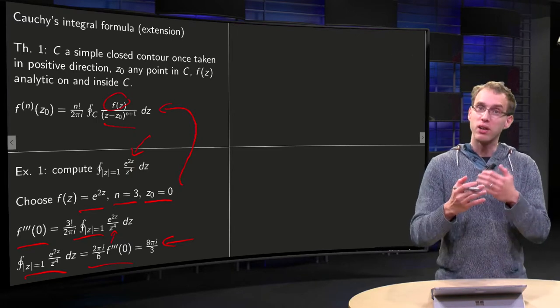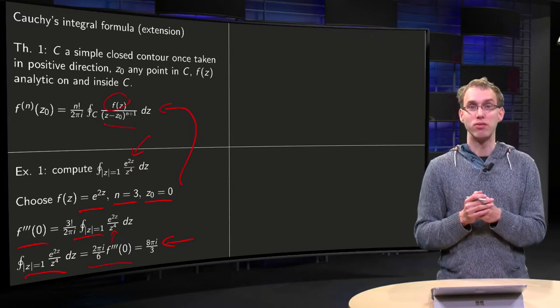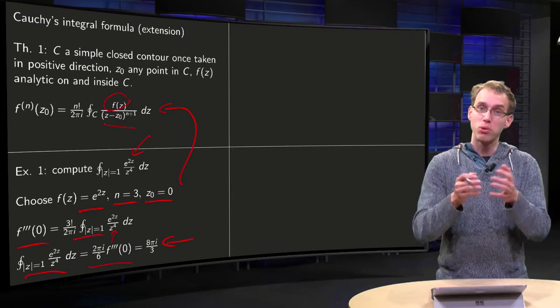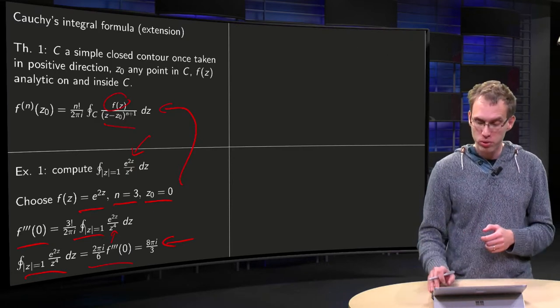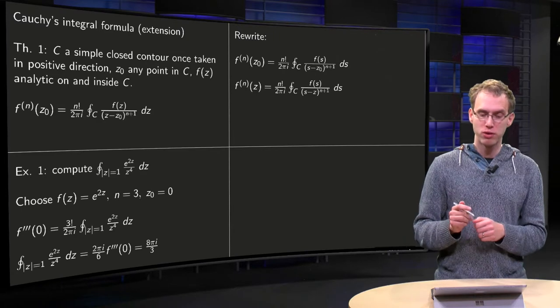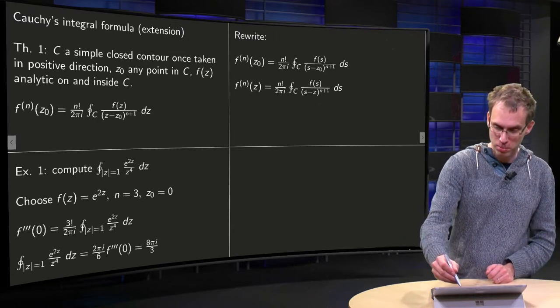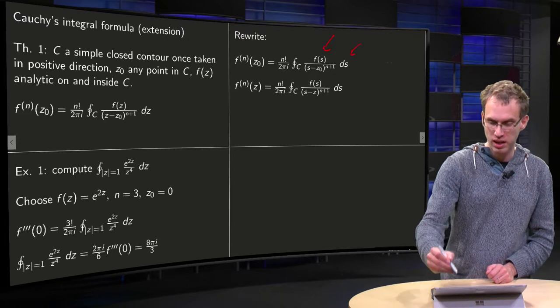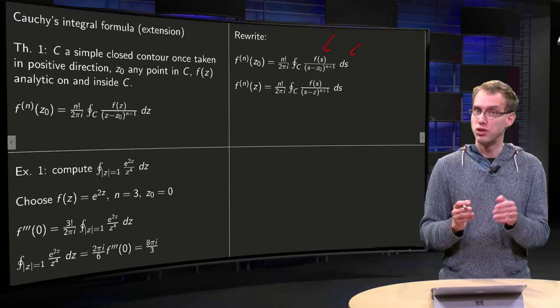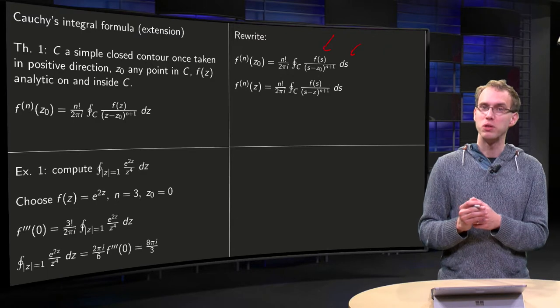So that's how you can use this extended version of Cauchy's integral formula to compute all kinds of integrals. So, why does it hold? Well, let's rewrite first a bit. We use first as our integration variable s, instead of z. Okay, that's fine, the s is just a dummy variable, and why do we do that?